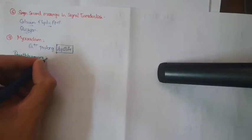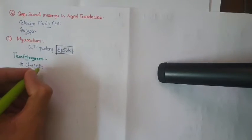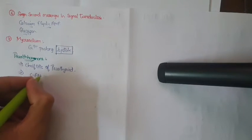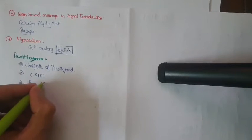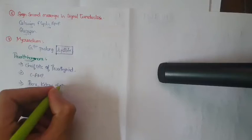Now let us see about PTH — that is parathyroid hormone. This parathyroid hormone is secreted by the chief cells of parathyroid. The release of PTH is mediated by cyclic AMP. We have to discuss three important sites of action: bone, kidney, and intestine. All three actions of PTH are going to increase the serum calcium level.